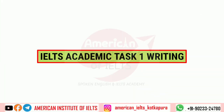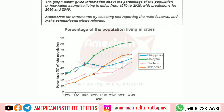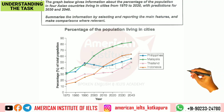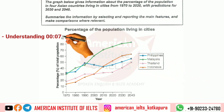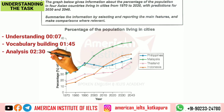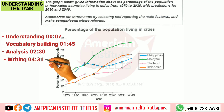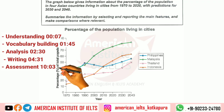Hi guys, warm welcome. Today I am going to solve Task 1 from Cambridge 18, Test 1, which is basically a line graph, as you can see it is in front of you. During this video I'll be making five parts: first understanding, then vocab building, then analysis so that we can focus on key features and conclude things better, then we will start writing, and at the end I will have some assessment to help you understand how the task is assessed.